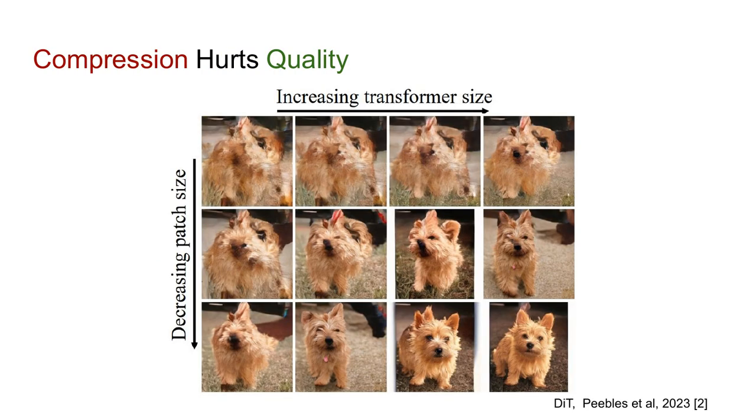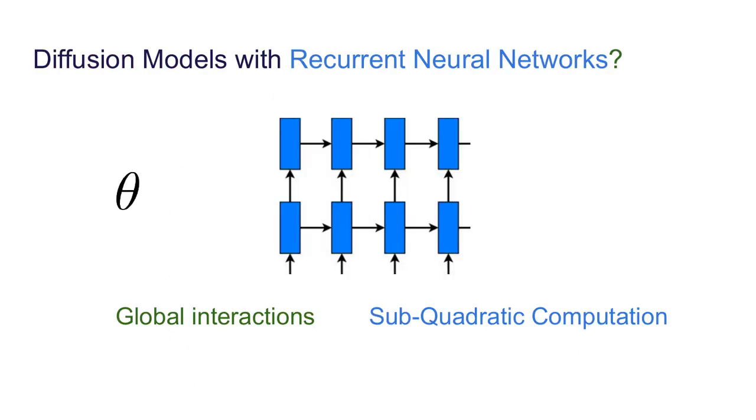One interesting phenomena is that these types of compression really do seem to hurt the quality of the final image. In the paper DIT, which is the baseline for this work, they show that decreasing the patch size leads to much better images. This is true even as you increase the transformer size. If you have two large patches, you get very poor quality in your final image. Based on this context, we were interested in a very simple question.